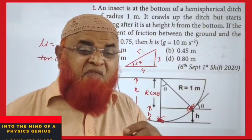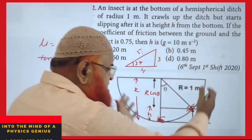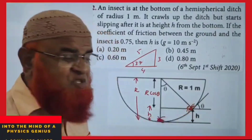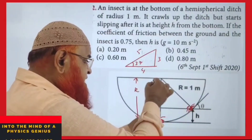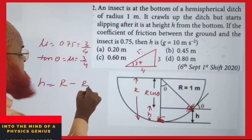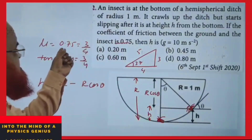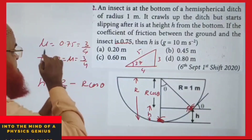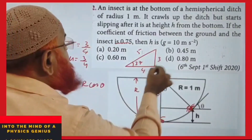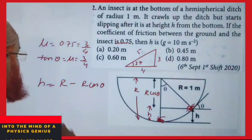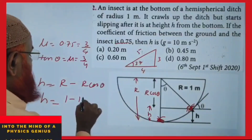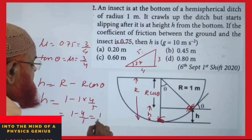This is a previous year JEE question: an insect crawls up a hemispherical bowl to height h and slides down. The radius is R, and the vertical component gives h = R − R·cosθ. With coefficient of friction μ = 0.75 = 3/4, tanθ = μ = 3/4, forming a 3-4-5 triangle so cosθ = 4/5. With R = 1: h = 1 − 4/5 = 1/5 = 0.2 metres.